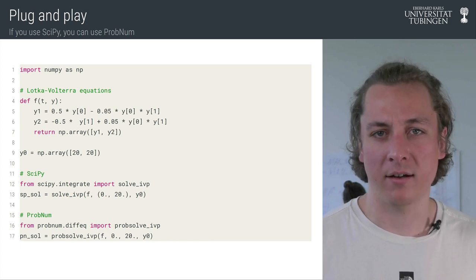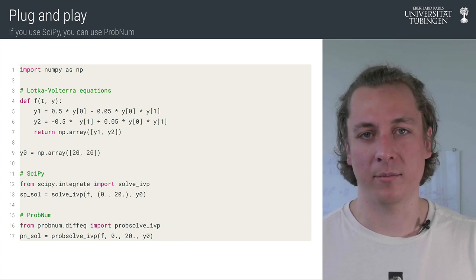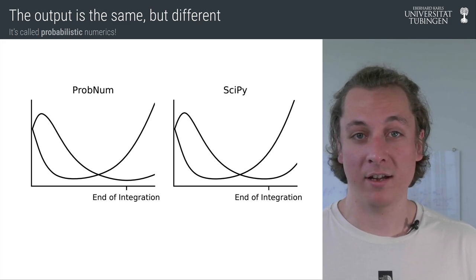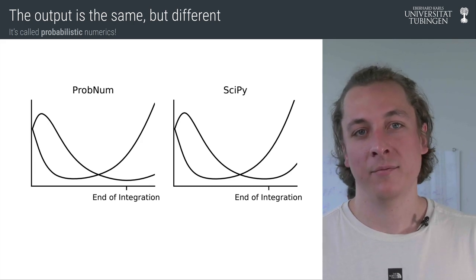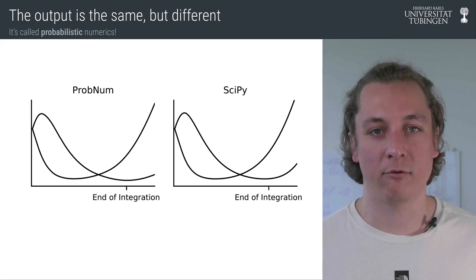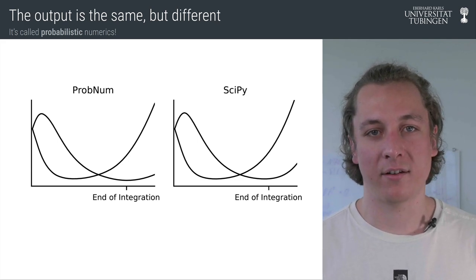How do these solution objects compare? Let's look at the result of this little code snippet. From this plot, it's clearly evident how superior the ProbNum output is, right? No, jokes aside, so far they look the same. You can evaluate both solutions in between grid points, you can do extrapolation, everything looks identical.